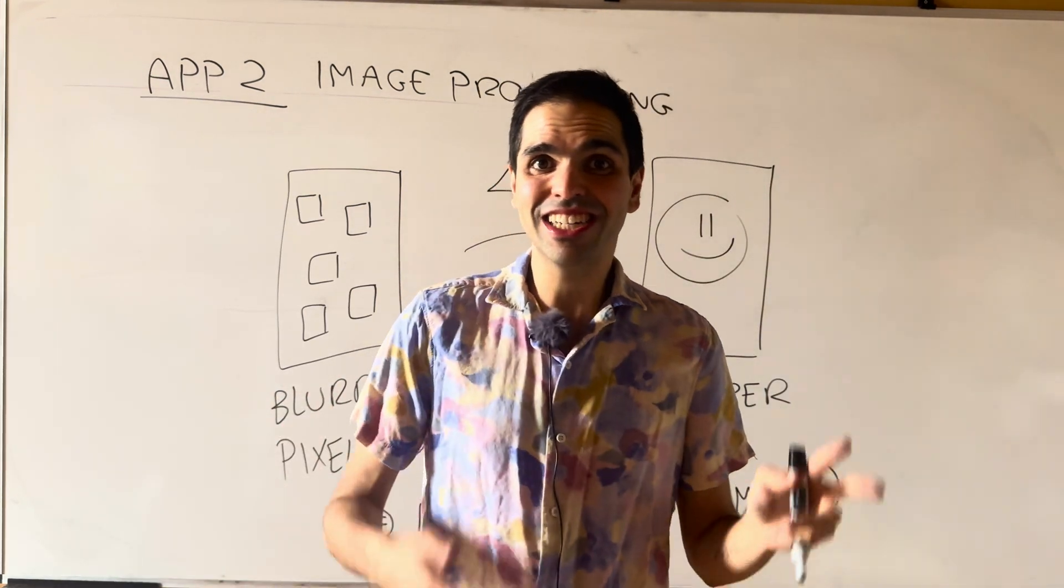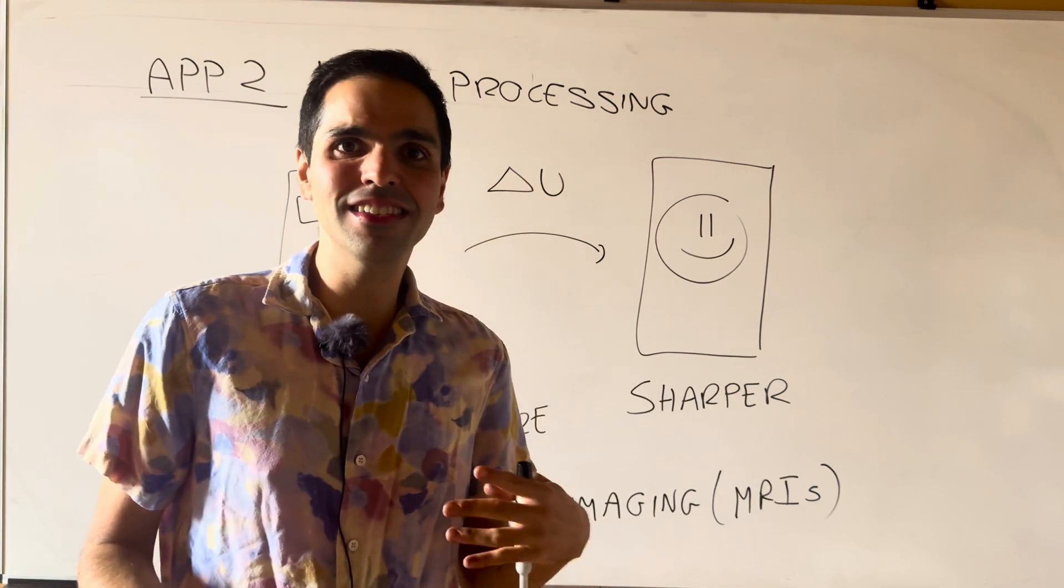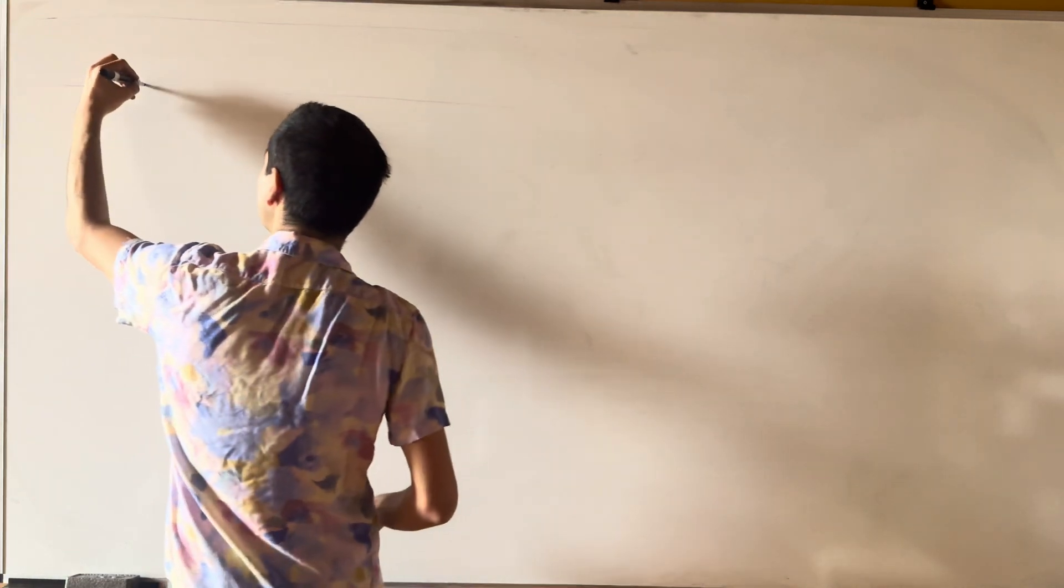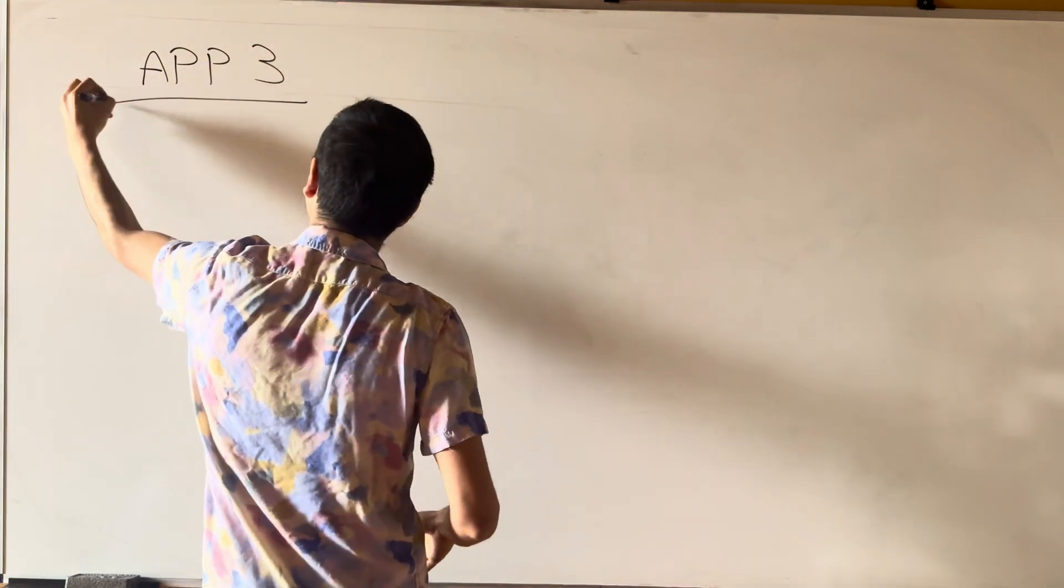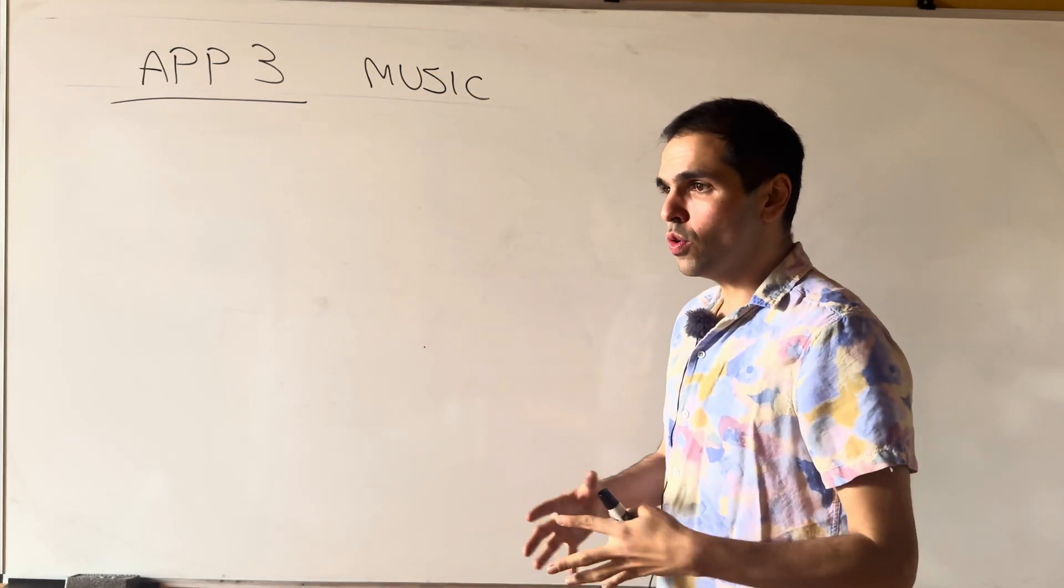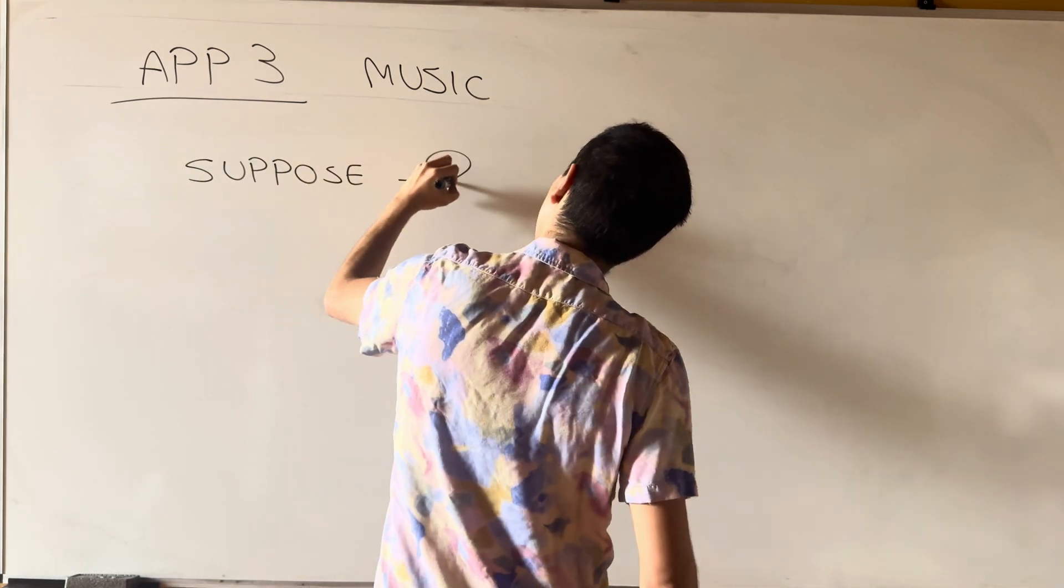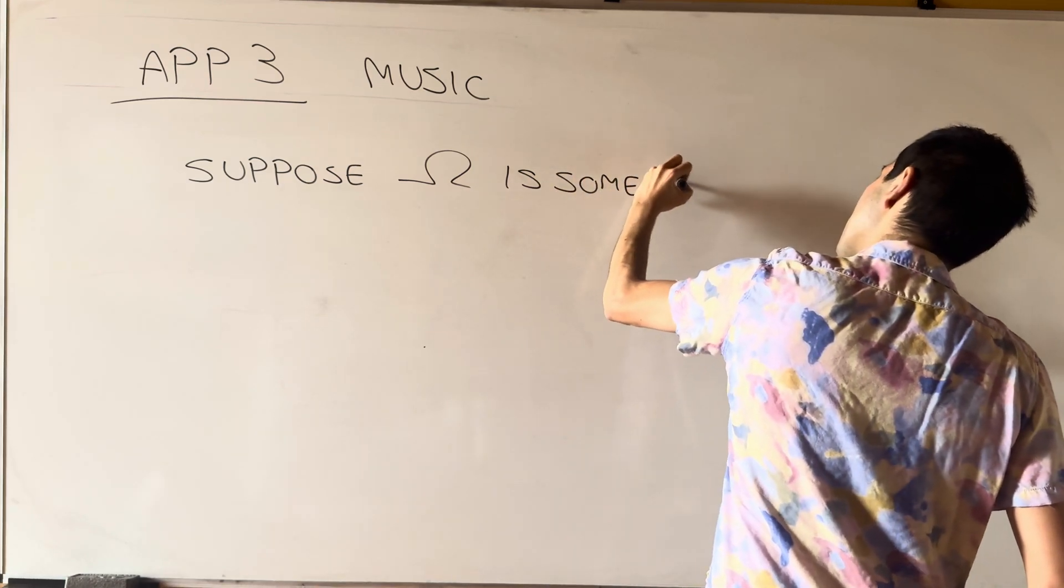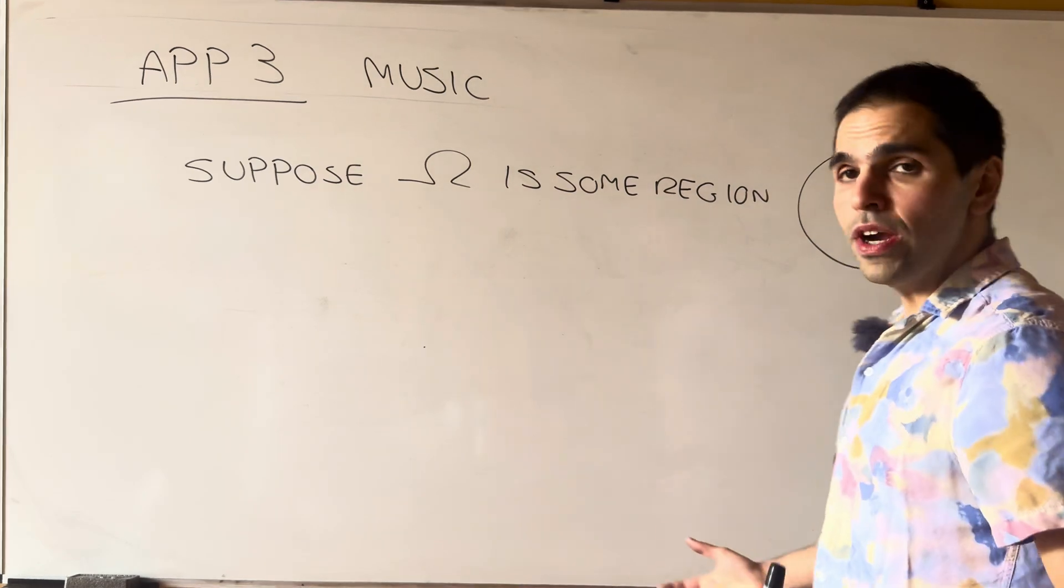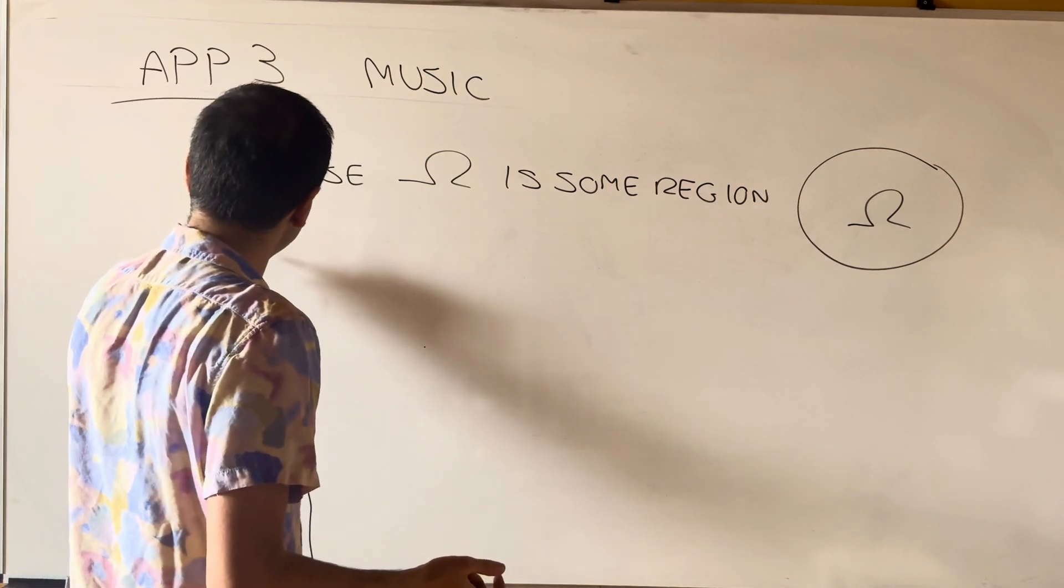Now, the last application is my favorite one because it turns out there's a surprising application of Laplace's equation to music. Because suppose you have the following object, once again, surprising application to music. So suppose omega is some region that's in R2, which in practice you can think of it as the surface of a drum.